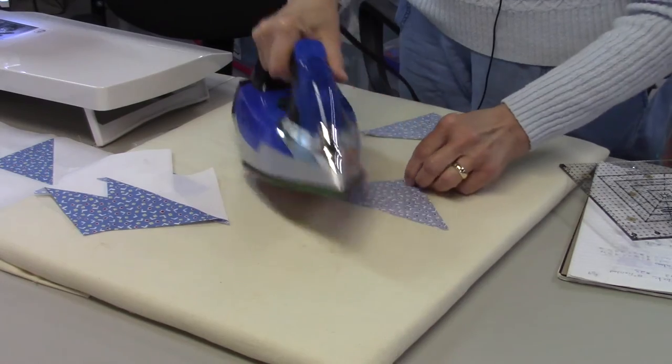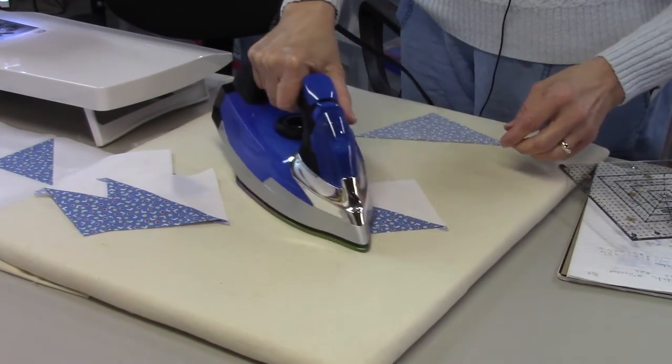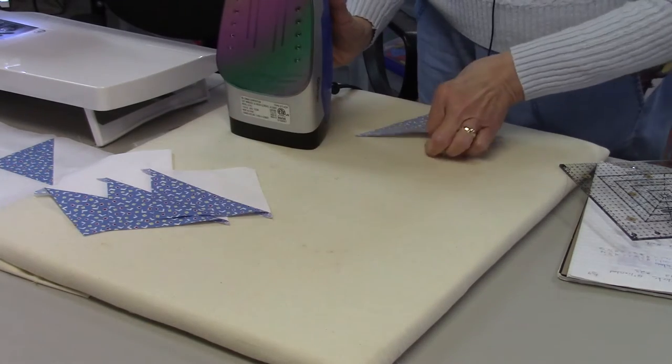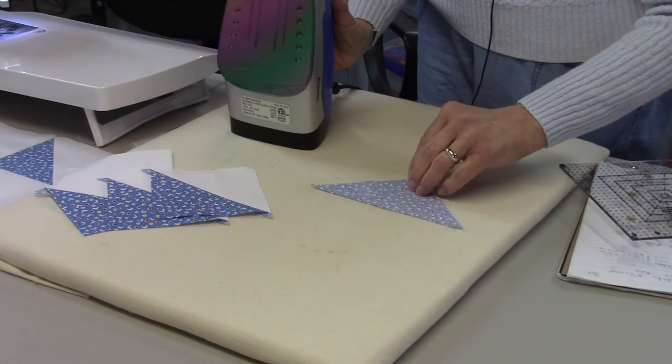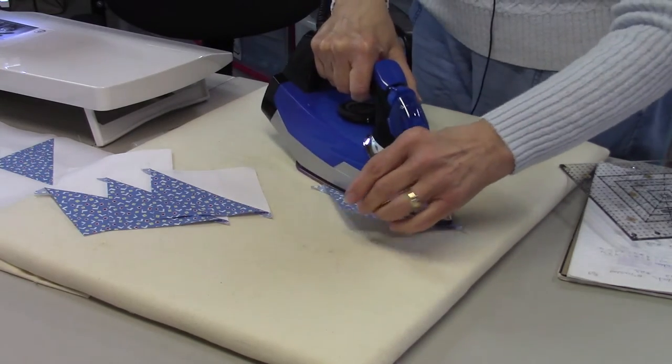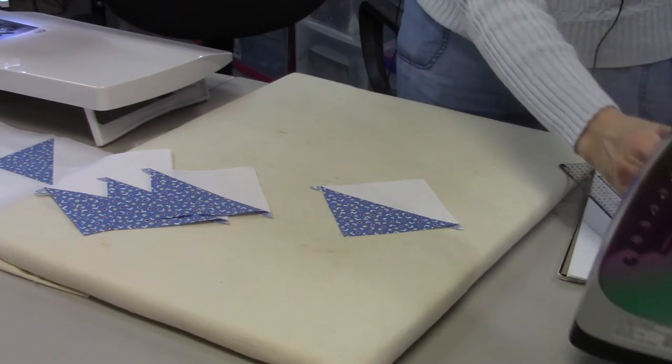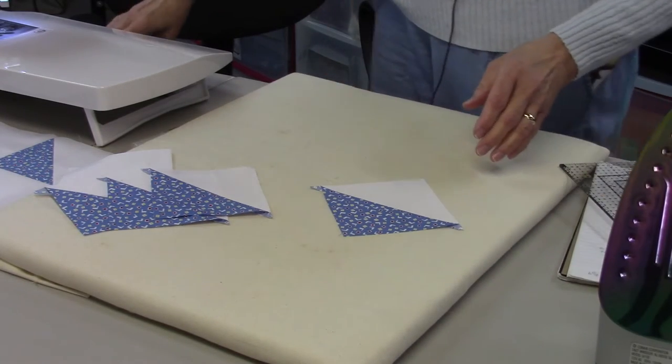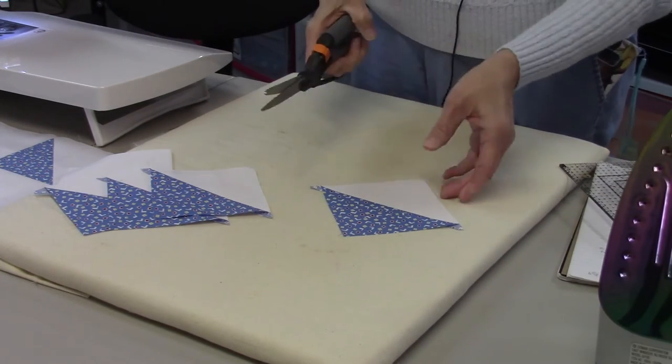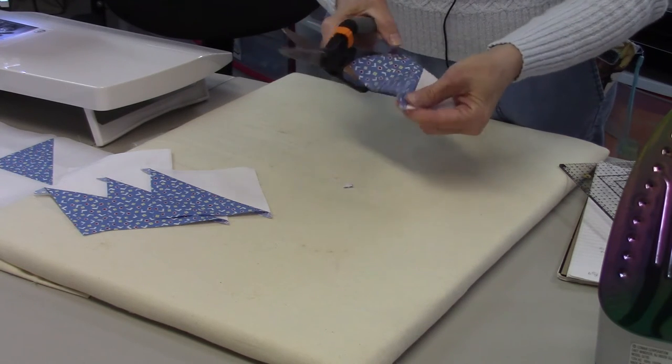If you're using steam like me, just be a little extra careful, especially on these half-square triangles, because this is now a bias edge where you're pressing. You cut it right down corner to corner on your square, so now you have a bias edge. You need to be careful that you don't press those out of shape.